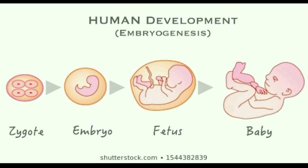This diagram shows human development, often known as embryogenesis. When the egg and the sperm fertilize, the resultant product is called the zygote. The zygote develops into an embryo. Till the 7th week, we call it an embryo, and after the 7th week is completed, it is a fetus. The newly born child is known as the baby.